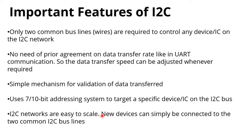I2C networks are easier to scale — new devices can simply be connected to the common bus lines. Using 7-bit addressing, up to 128 devices (2^7) can be connected; with 10-bit addressing, up to 1024 devices (2^10) can be connected. In this I2C protocol we can communicate with up to 1024 devices. In contrast, SPI has virtually unlimited device connections.